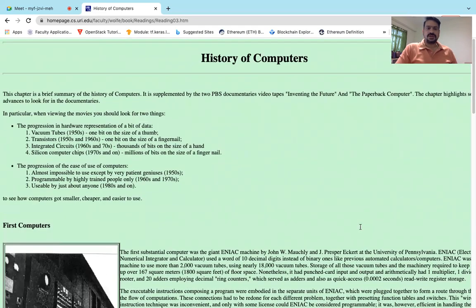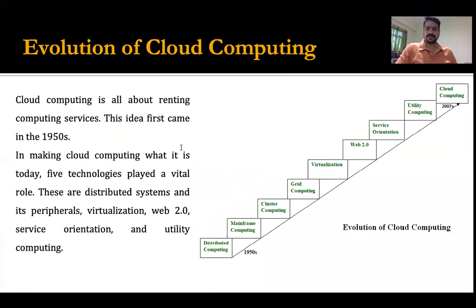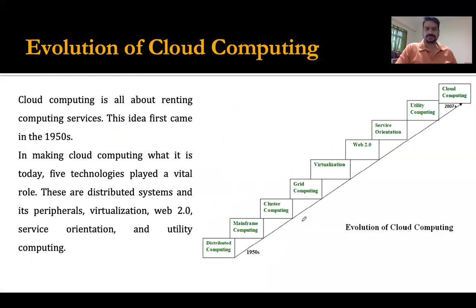The very first computers used vacuum tubes, then we had transistors from 1950 to 1960, then integrated circuits from the 1960s to 1970s, and then silicon computer chips from around the 1970s to now. There has been clear progress in computing. In the early days, concepts like distributed computing, mainframes, cluster computing, grid computing, virtualization, Web 2.0, service orientation, and utility computing all formed the basis of what we see today as cloud computing.